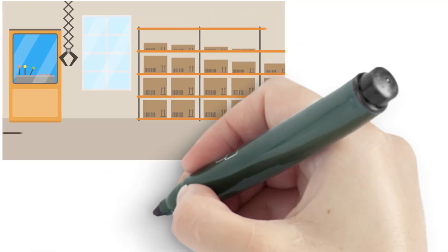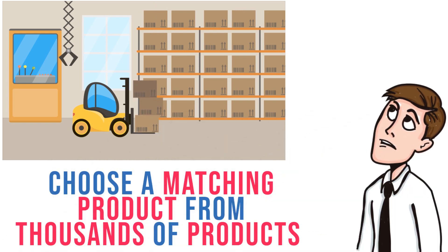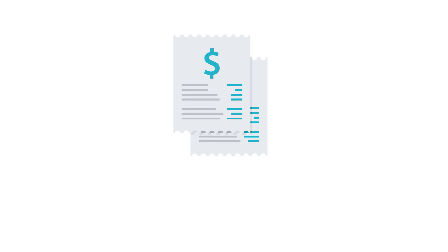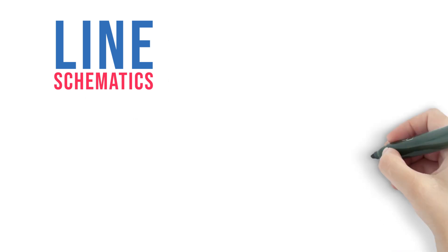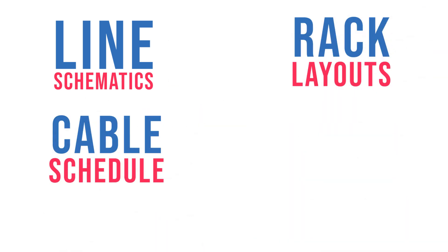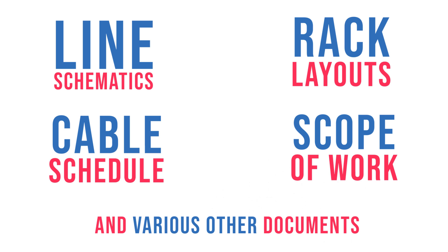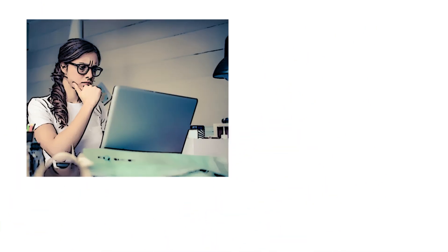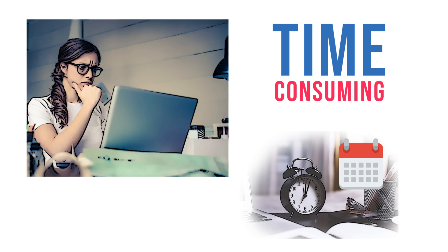Post this, the designer will choose a matching product from thousands of products from hundreds of manufacturers, and finally a bill of materials is created. That's not all. The designer will also have to create line schematics, rack layouts, cable schedules, the scope of work, and various other documents. The entire process is highly time-consuming and could even take days to make a complex design.